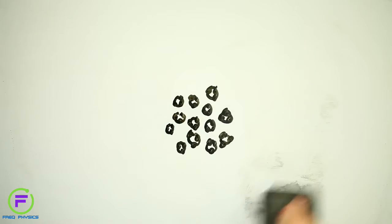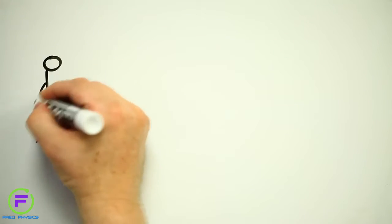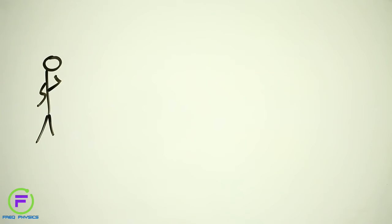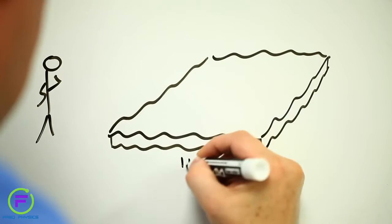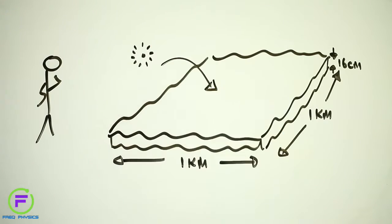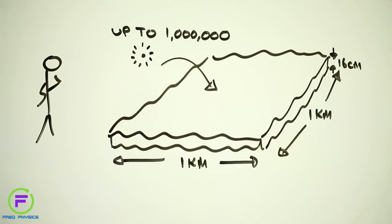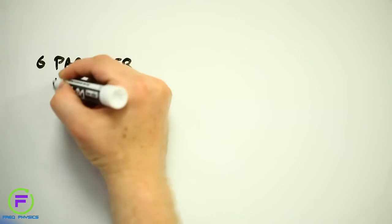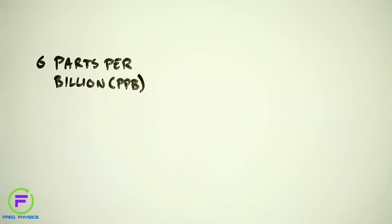Of course how dangerous this is depends on how large the resulting exposures are. Professor Sherry Mason at the State University of New York at Fredonia is one scientist working on the problem. Sherry and her colleagues have measured up to a million microbeads per square kilometer at the surface of Lake Ontario. This is roughly equivalent to a polyethylene concentration of six parts per billion.